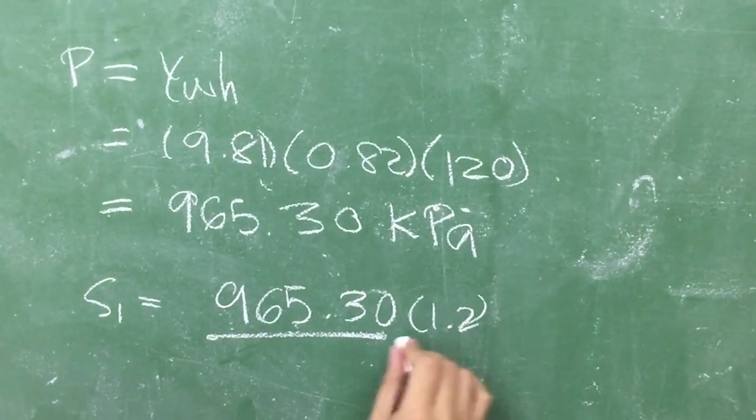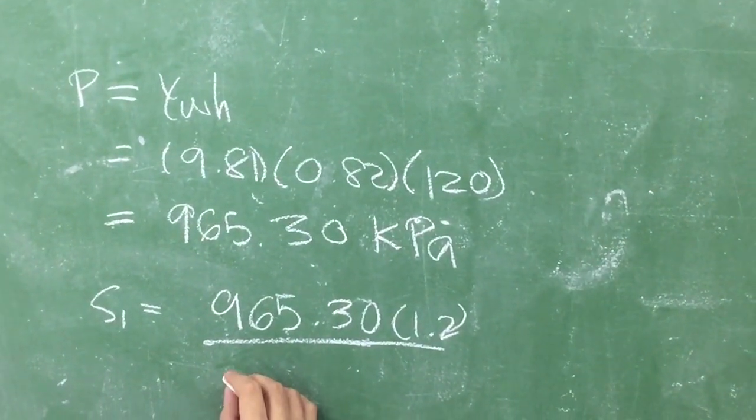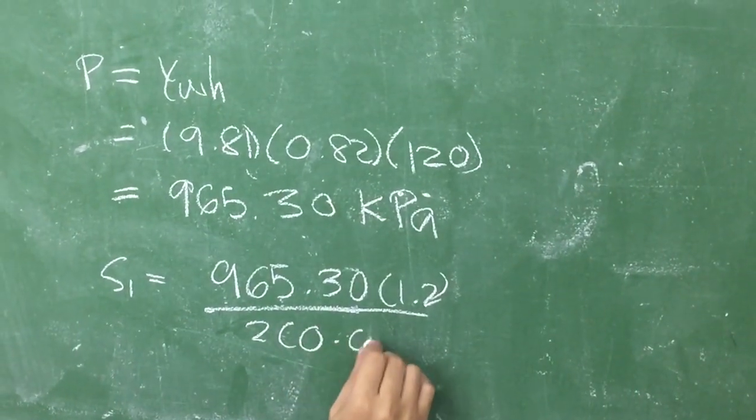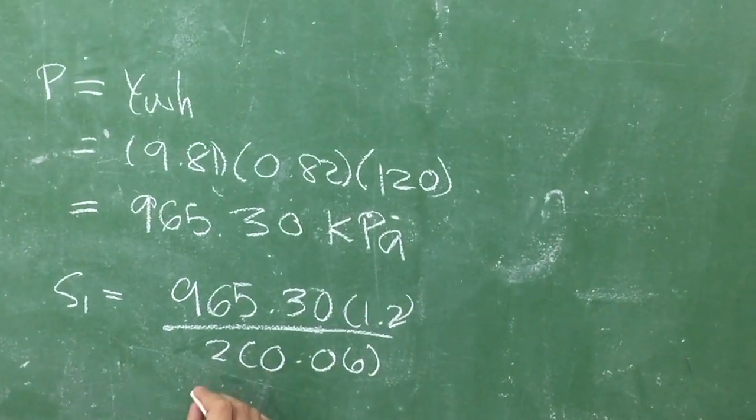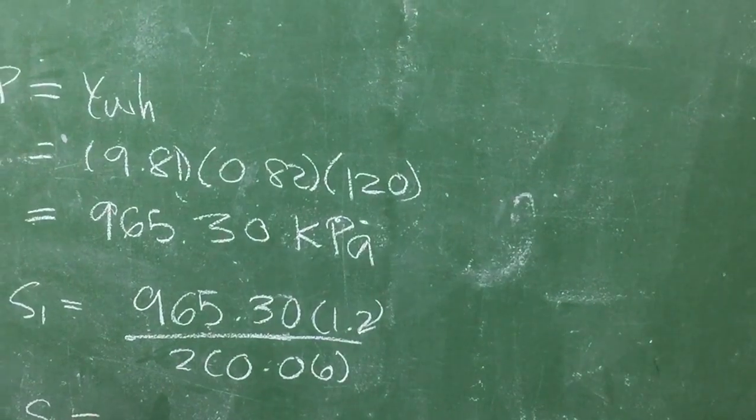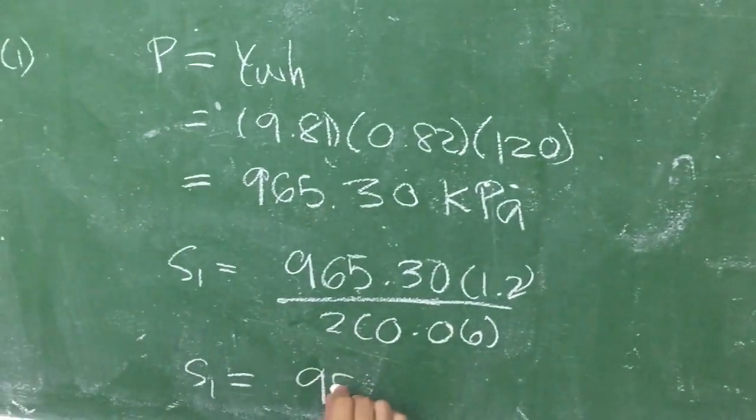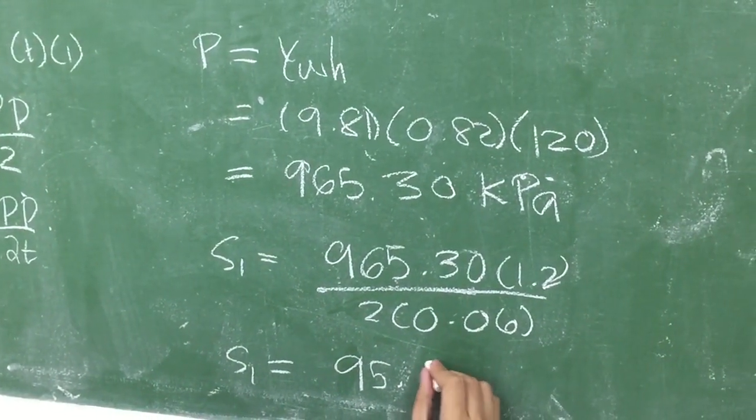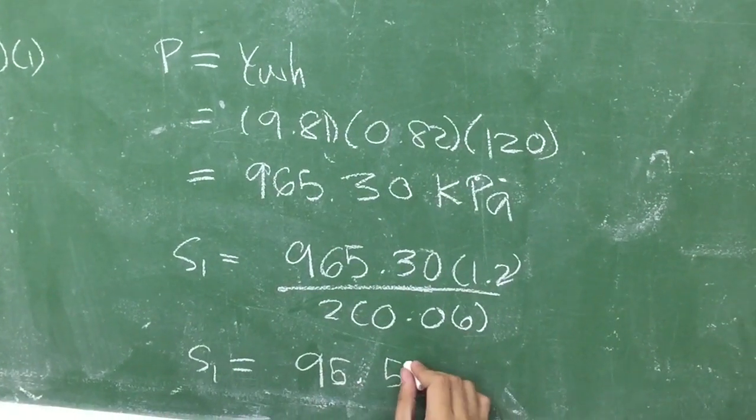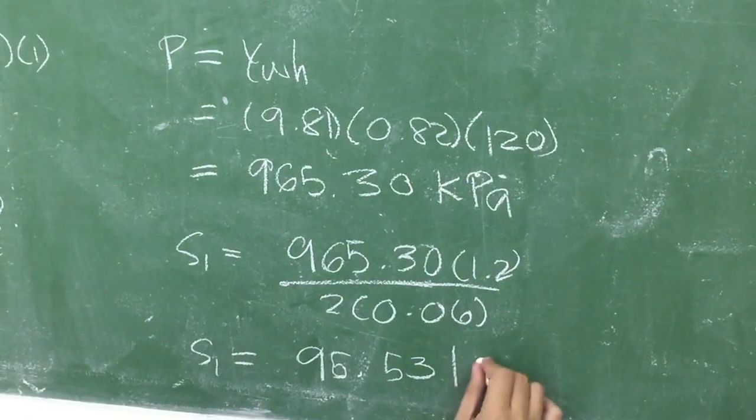Now we can get the value of S, which equals 965.30 times the diameter of 1.2, all over 2 times 0.06 (the thickness of the wall). So we can get the value of 96,530 kPa.